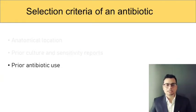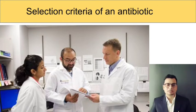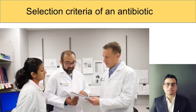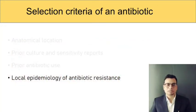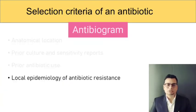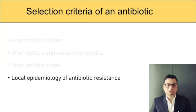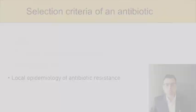The fourth criteria is the local epidemiology of antibiotic resistance. You must discuss with your clinical microbiologist or infectious disease consultant about the antibiogram of your ICU. This antibiogram will inform you of the types of organisms the microbiology lab has isolated and their sensitivity patterns in different biological samples over a period of time — so you will know about with whom you are dealing.